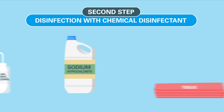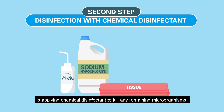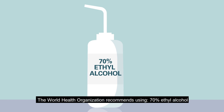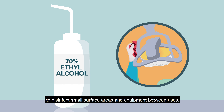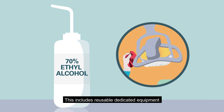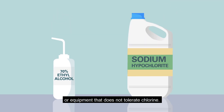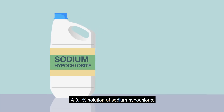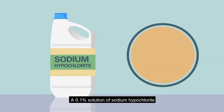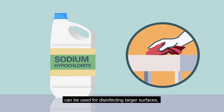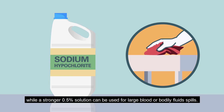The second essential step is applying a chemical disinfectant to kill any remaining microorganisms. The World Health Organization recommends using 70% ethyl alcohol to disinfect small surface areas and equipment between uses. This includes reusable dedicated equipment or equipment that does not tolerate chlorine. A 0.1% solution of sodium hypochlorite can be used for disinfecting larger surfaces, while a stronger 0.5% solution can be used for large blood or bodily fluid spills.